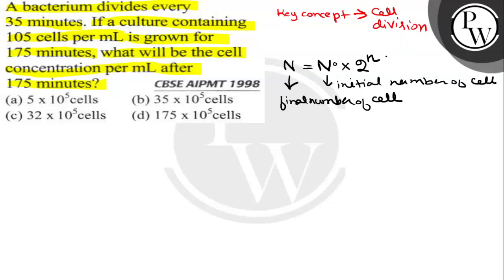And this small n represents the number of generations. Now small n is derived by the formula t by g, where t is the total time taken and g is the generation time.